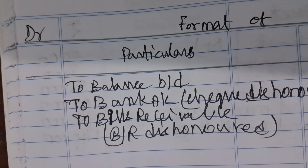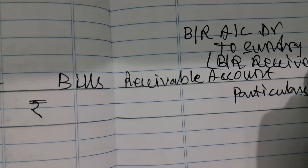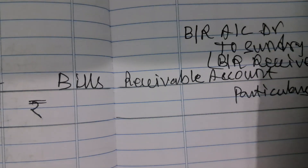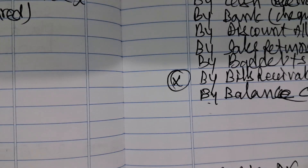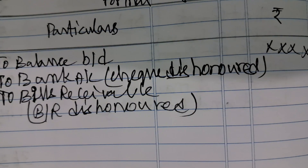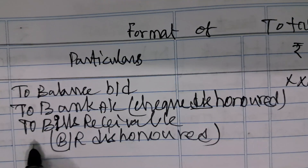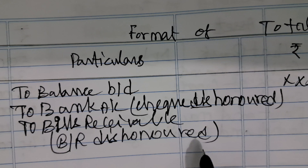If bills receivable are received from debtors, the entry is Bills Receivable Account debit to Debtors Account, so it is posted on the credit side of the Total Debtors Account as 'By Bills Receivable received'. If the bills receivable is dishonoured, the reversal entry is Sundry Debtors Account debit to Bills Receivable, posted on the debit side as 'To Bills Receivable — dishonoured'.